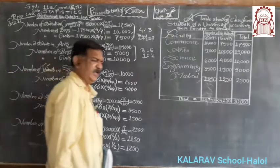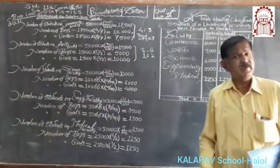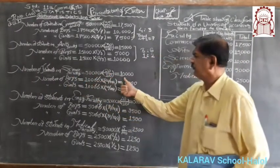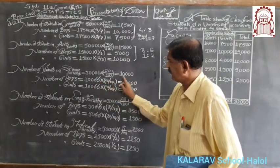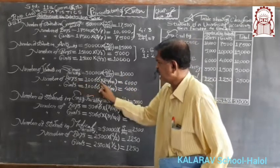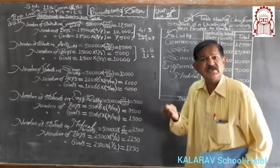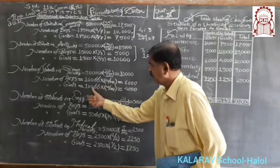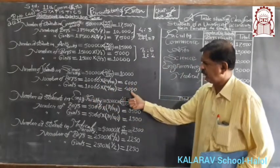In science faculty, 60% are boys and the remaining 40% are girls. Total students are 10,000. Therefore, number of boys equals 10,000 into 60 upon 100, and number of girls equals 10,000 into 40 upon 100, which gives 6,000 boys and 4,000 girls respectively.